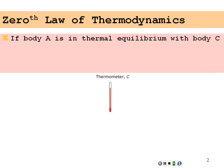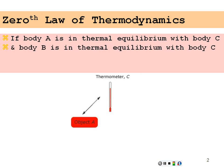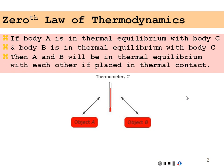If body A is in thermal equilibrium with body C, and if body B is in thermal equilibrium with body C, so in this case A and B are themselves in thermal equilibrium with body C, which is our thermometer, then it's true that A and B will be in thermal equilibrium with each other if they happen to be placed in thermal contact,